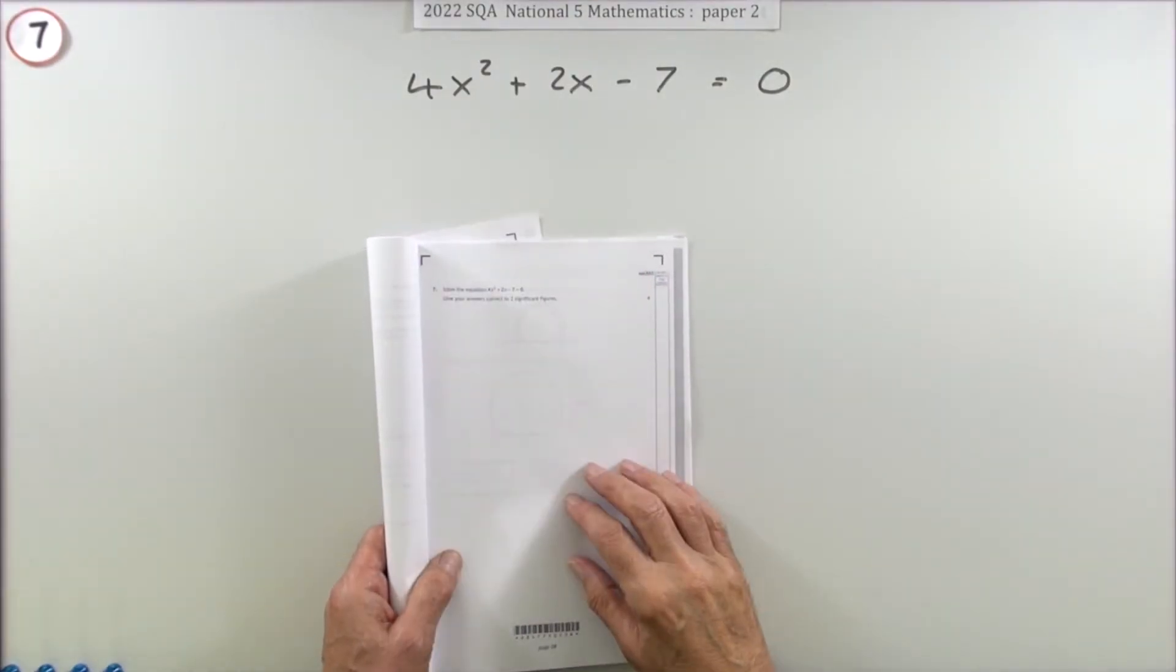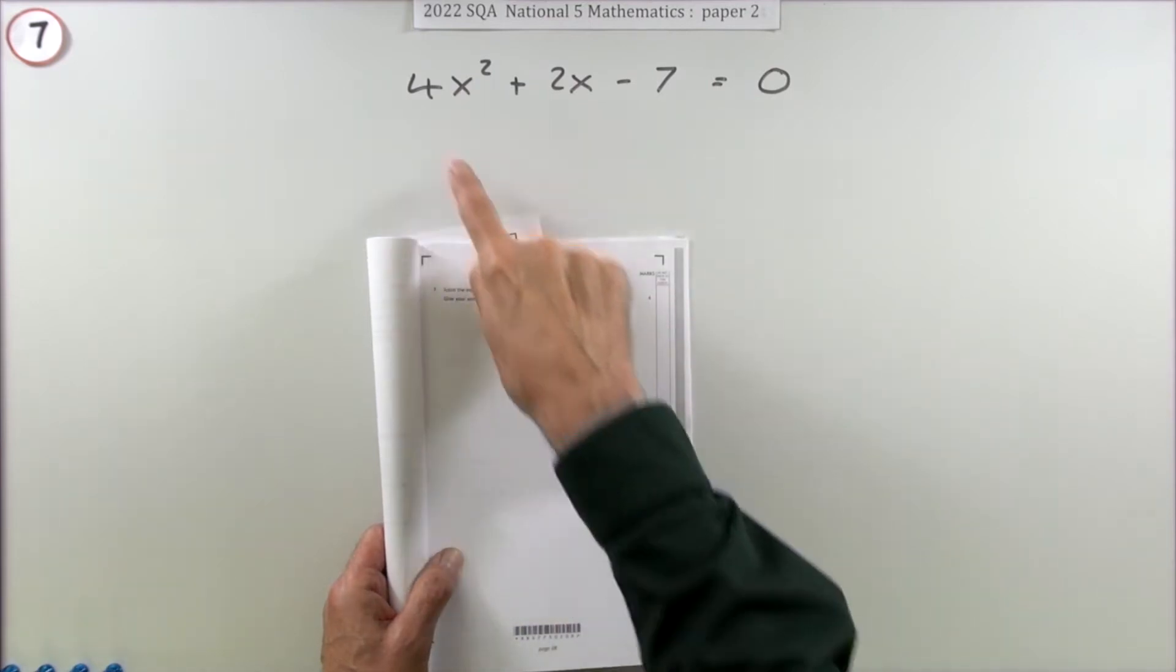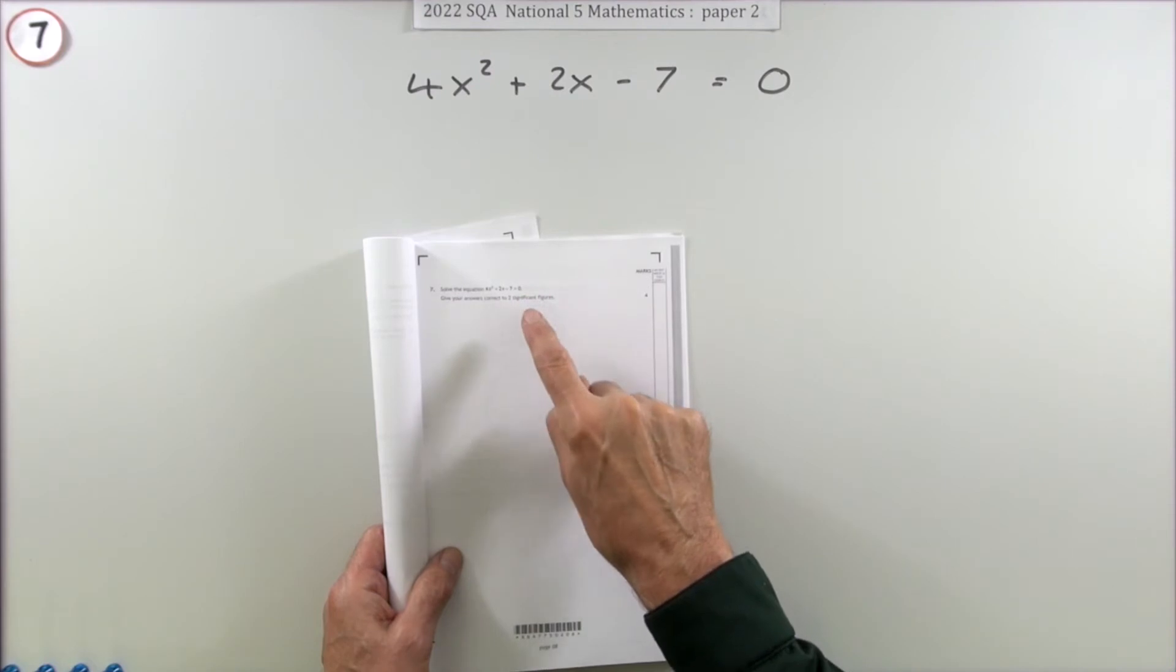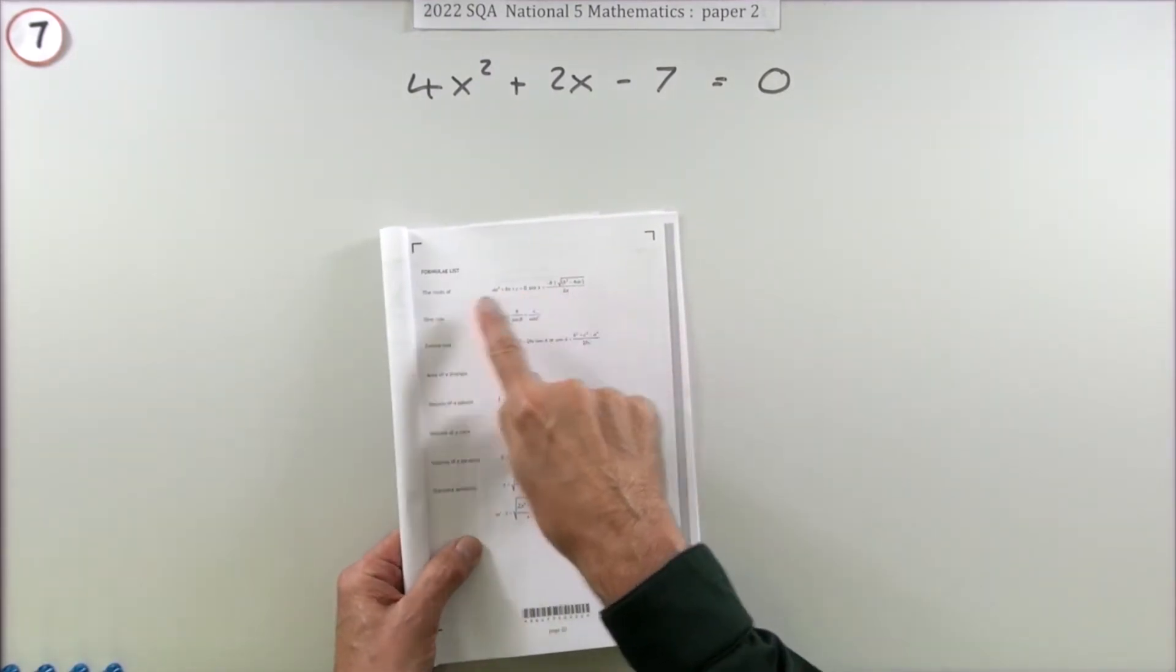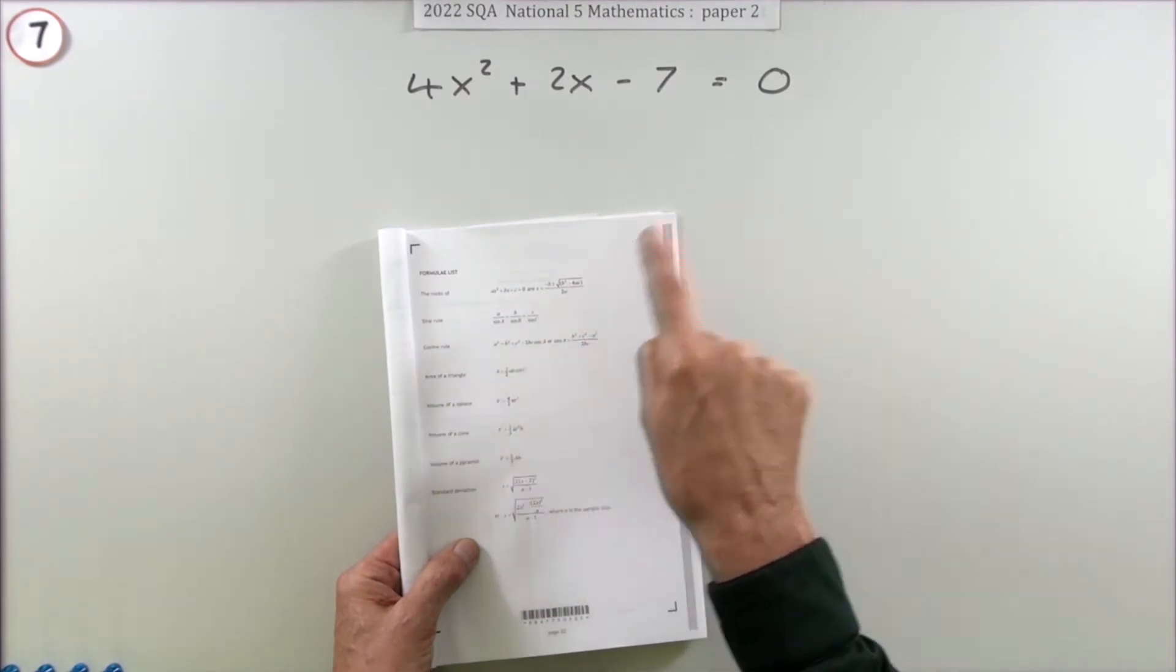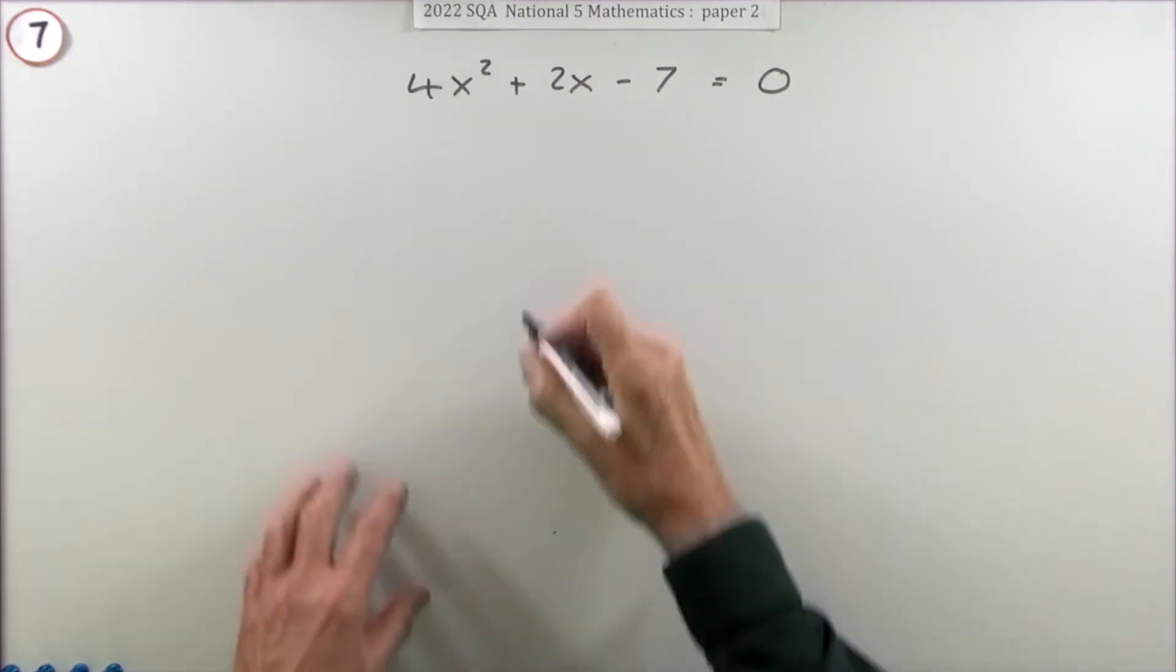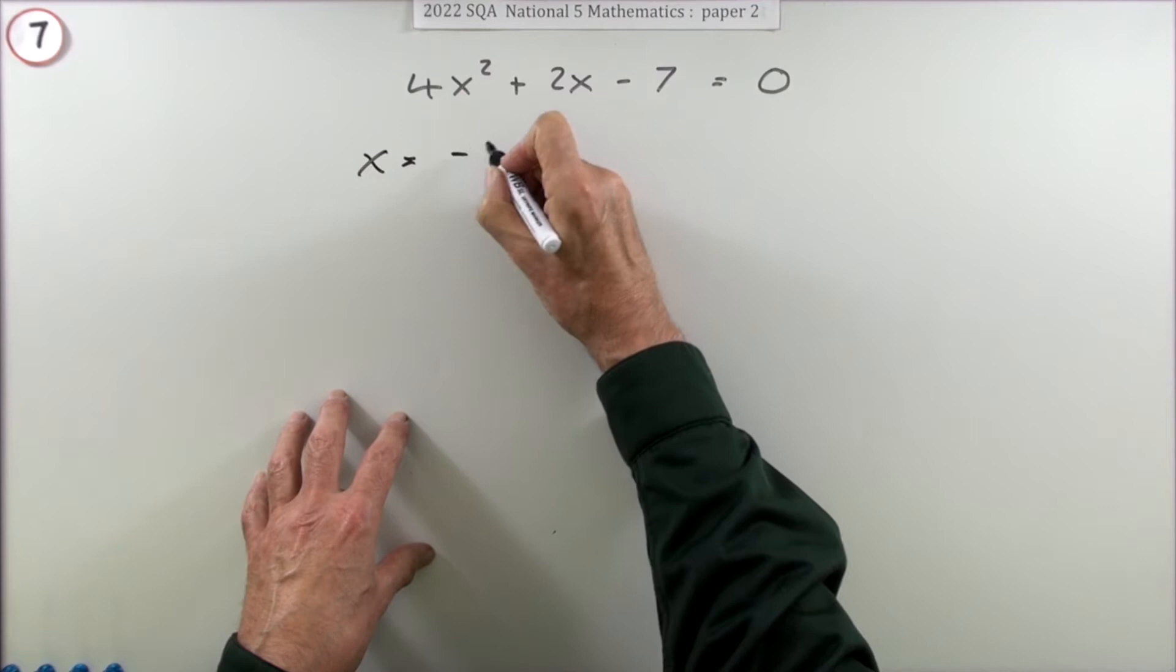Number seven from the 2022 National Five Paper Two, a four mark question. Solve this quadratic equation, 4x² + 2x - 7 = 0, giving your answer correct to two significant figures. It's just formula, and it's there at the front if you don't remember it. Formula, figures, press the button, answer—four marks.